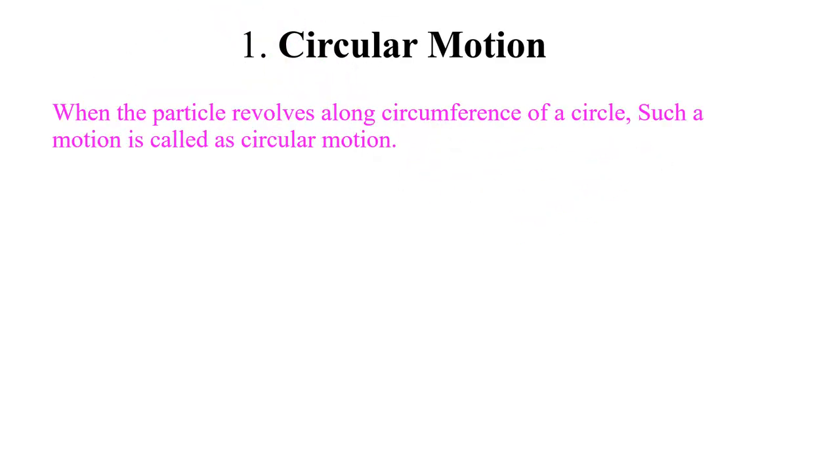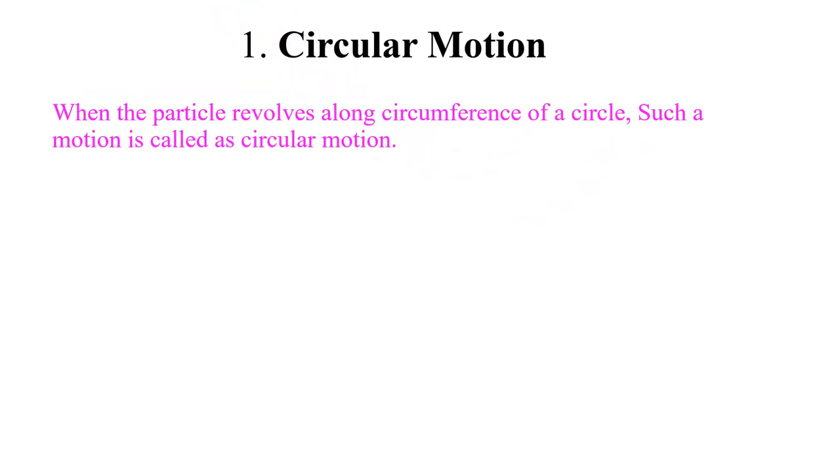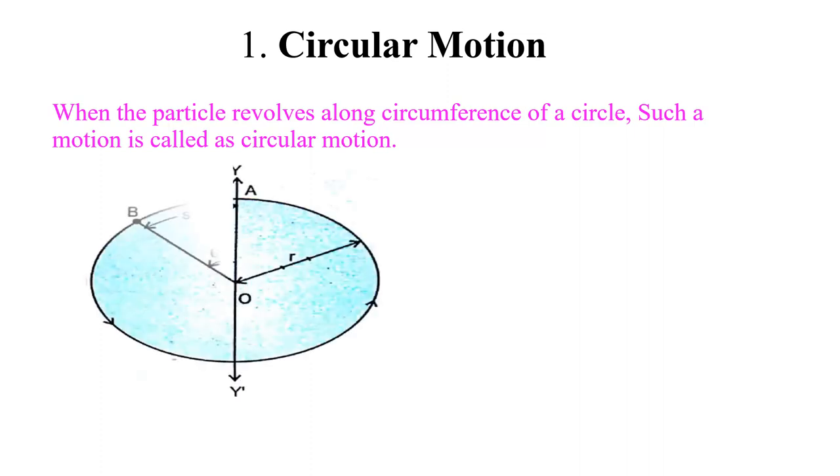So what is circular motion? When a particle revolves along the circumference of a circle, such a motion is called circular motion. If a particle moves in this way, we call it circular motion.